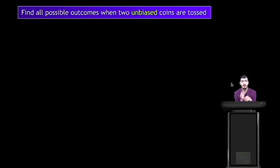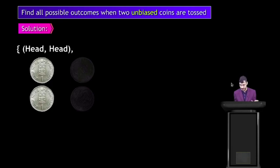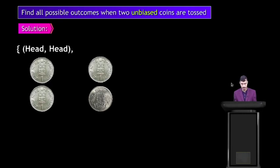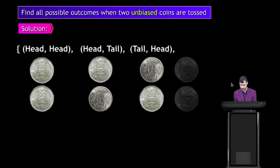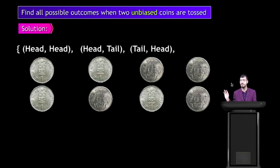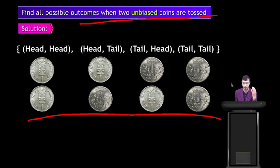Find all possible outcomes when two unbiased coins are tossed. With two coins, the first possibility is head-head; second, head-tail; third, tail-head; and fourth, tail-tail. So there are four possibilities: head-head, head-tail, tail-head, tail-tail.